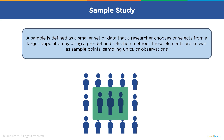Let's understand this with the help of an example. Suppose a company has 800 female employees and 200 male employees. You want to ensure that the sample reflects the gender balance of the company, so you sort the population into two strata based on gender. Then you use random sampling on each group, selecting 80 women and 20 men respectively, which will give you a representative sample of 100 people. Now you can conduct your statistical analysis on these 100 people to arrive at a larger conclusion.